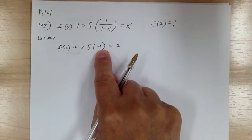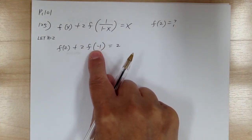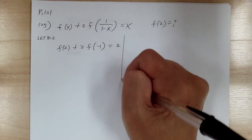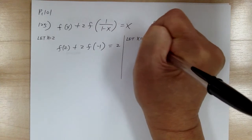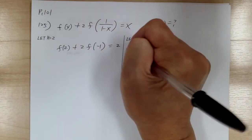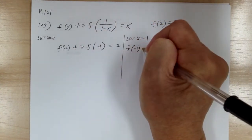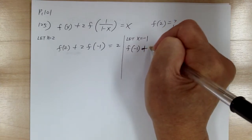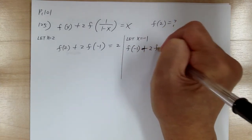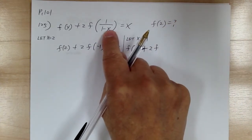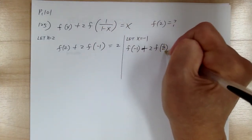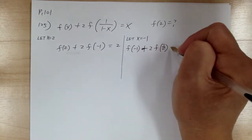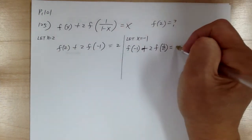Now we have f of negative 1, so we let x equal to negative 1. Substituting: f of negative 1 plus 2 times f of — put negative 1 into (1 over 1 minus x): 1 minus negative 1 gives 2, so 1 over 2, which is one half. And this equals negative 1.